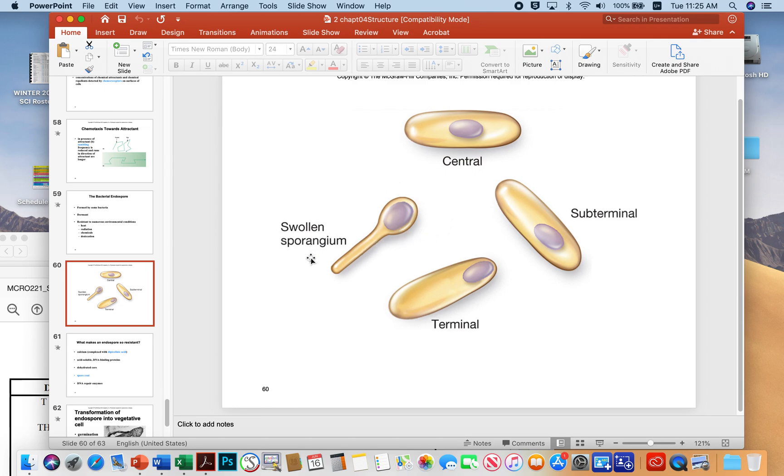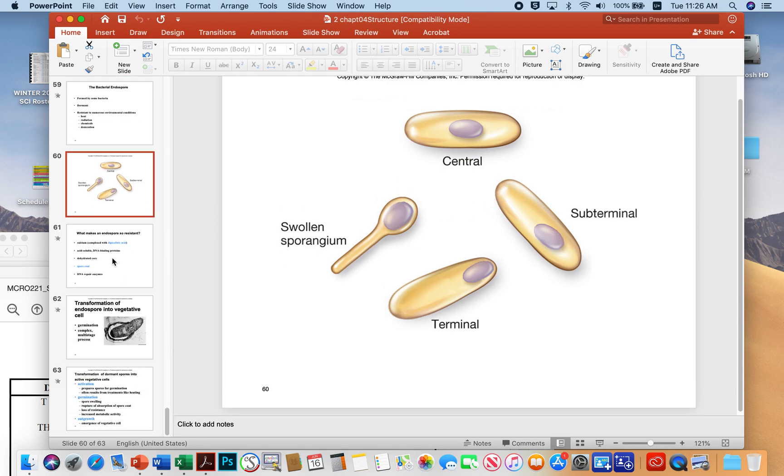This is showing us some different arrangements. If you see this under the microscope, this is what the botulism bacterium looks like, for example. If you find this in some food, you probably shouldn't eat it. It has this tennis racket appearance where the spore is so big it creates the swollen sporangium appearance. Sometimes they're terminal and sometimes they're subterminal. We would have done spore stains, and I'll show you some in the lab section of this class.